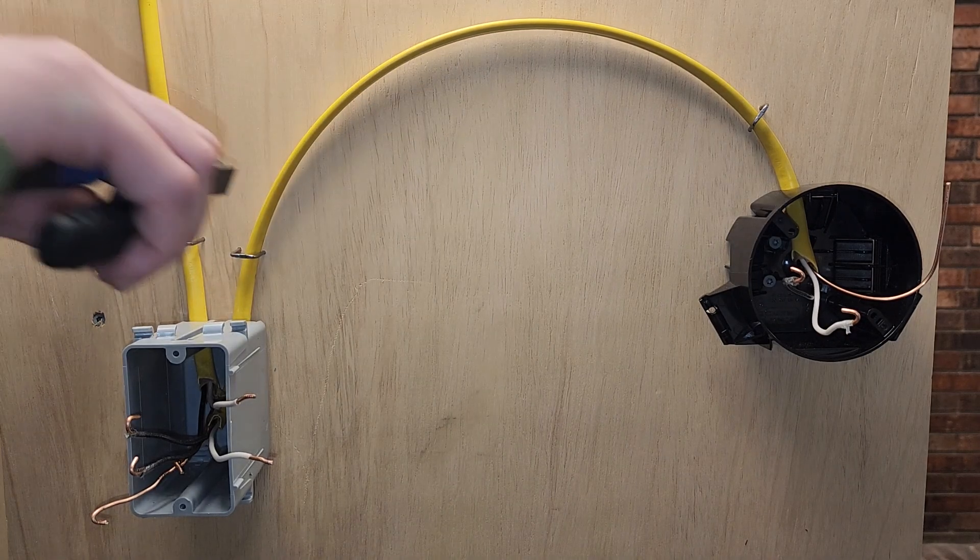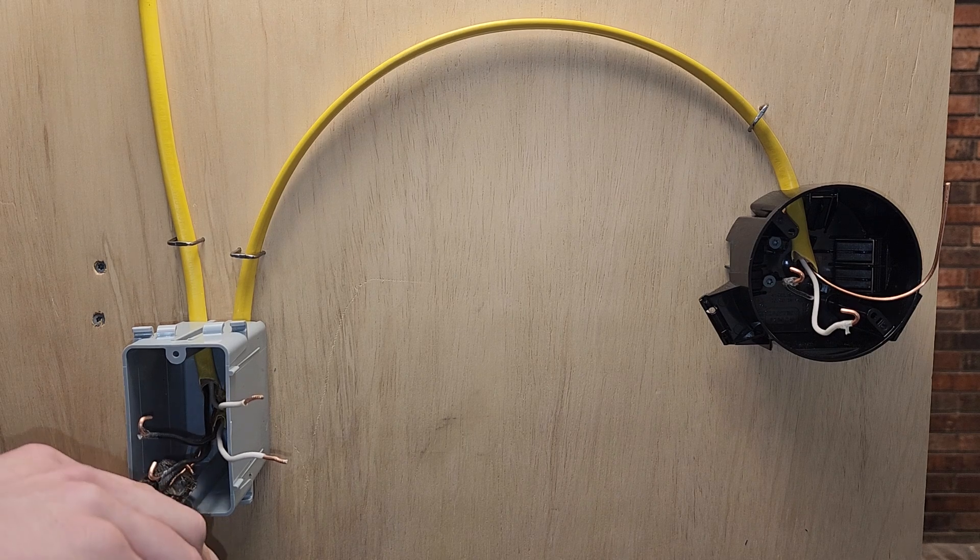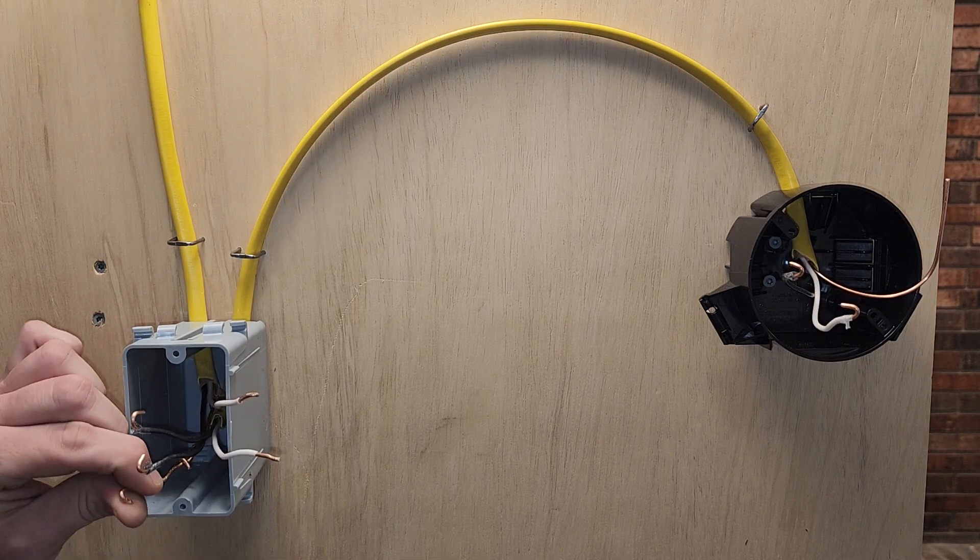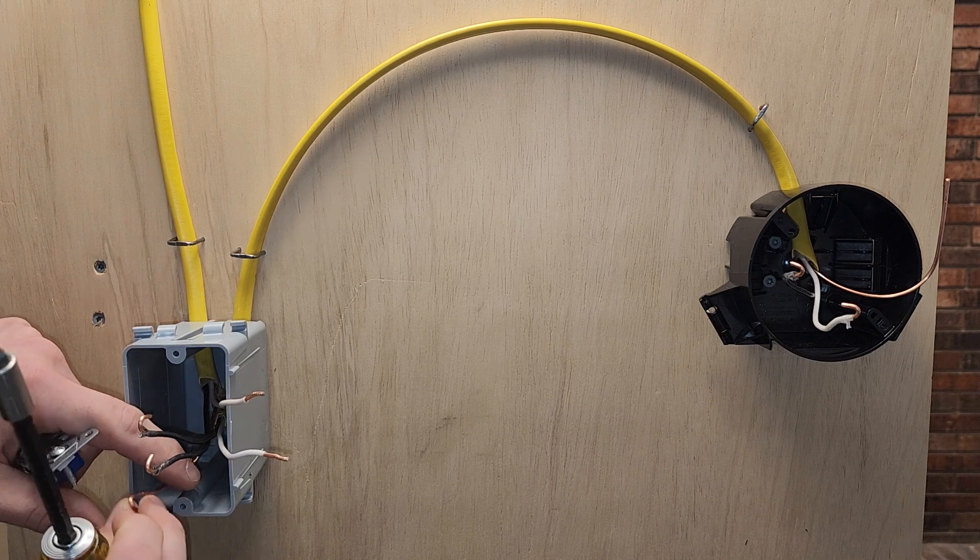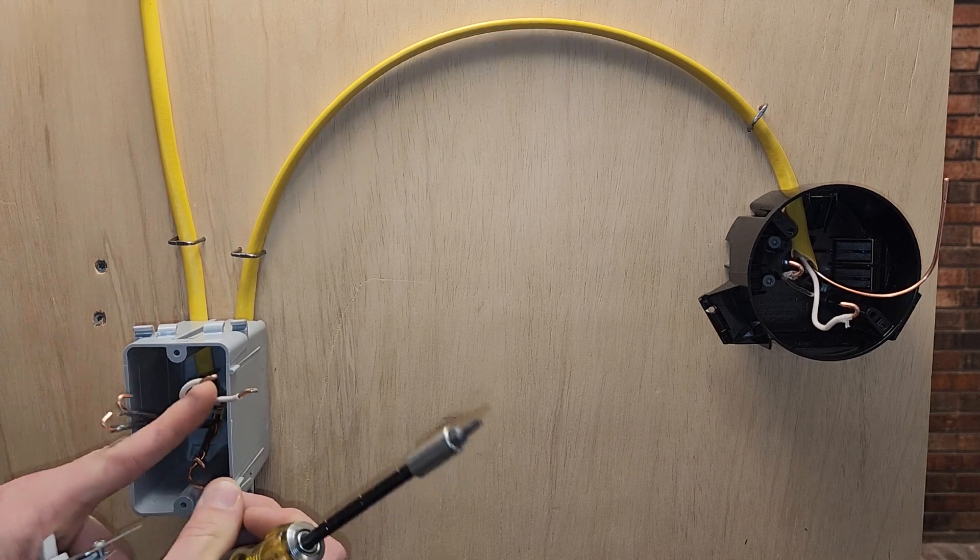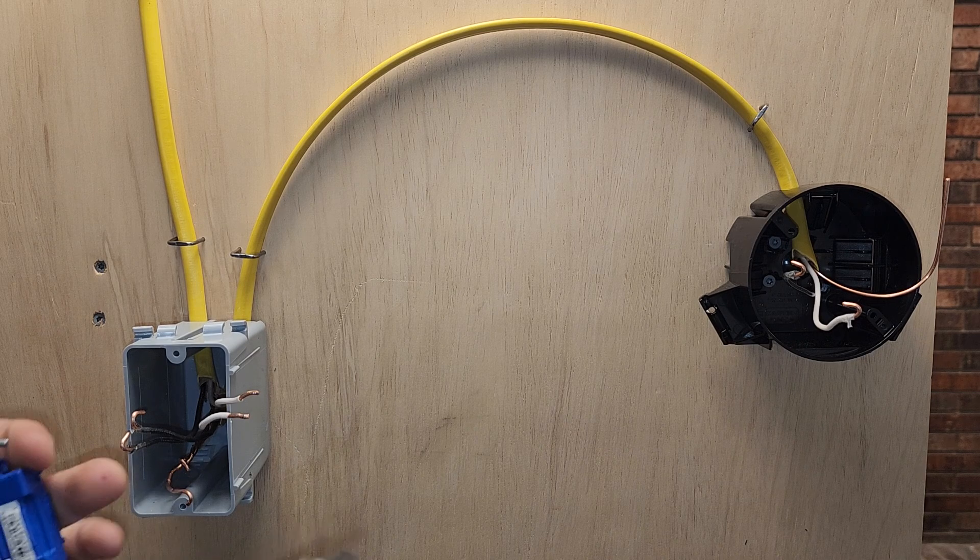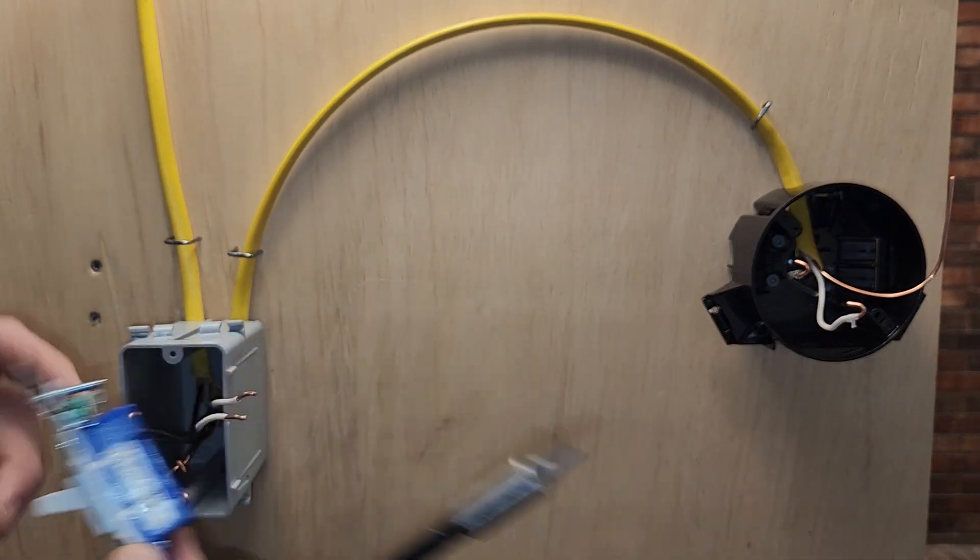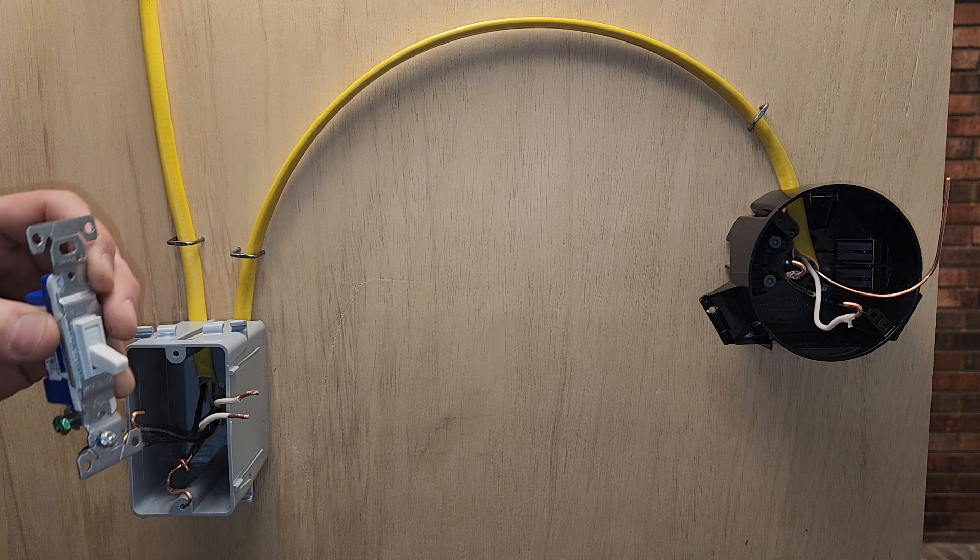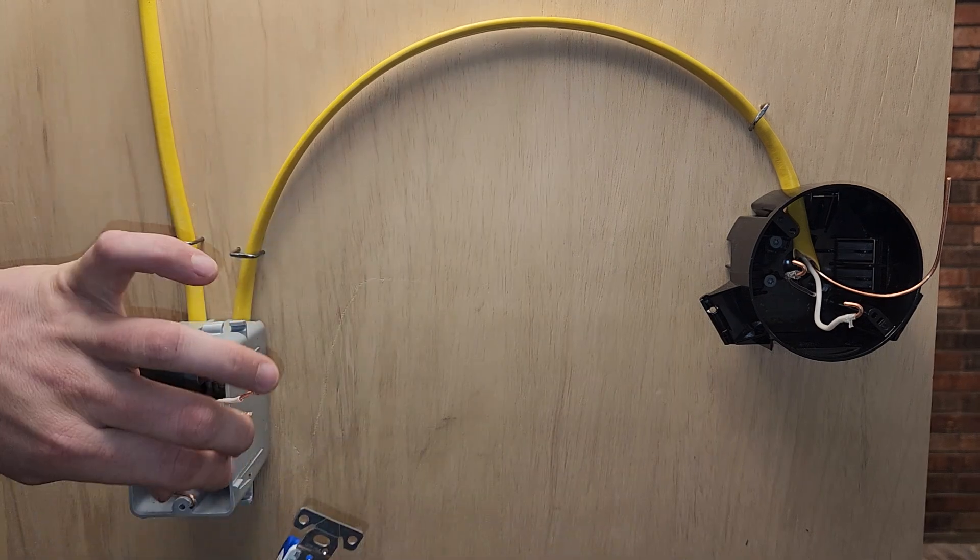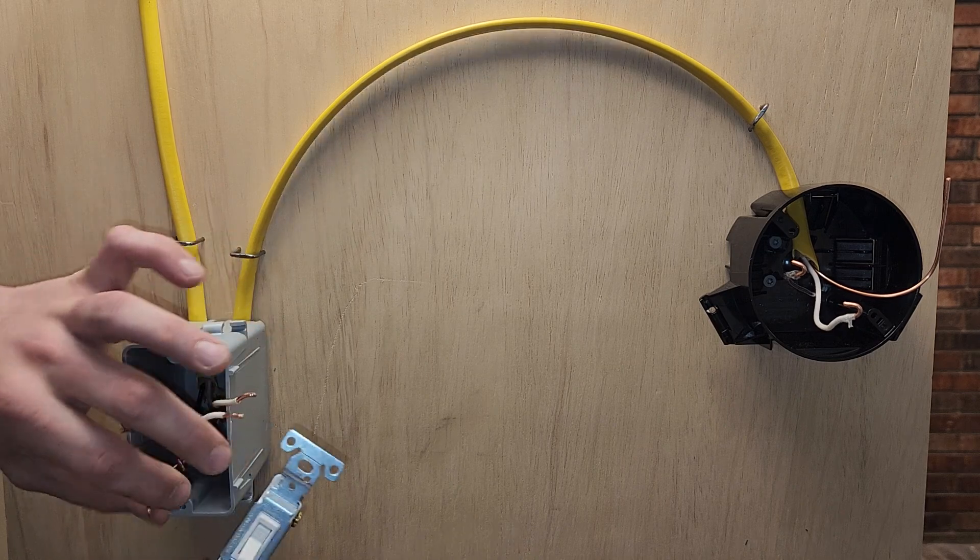I have our two grounds tied together already in this box with just the loops ready to be made up. An important thing to know is the loop that goes on to this green ground screw. You want to make sure the loop is going clockwise with the screw as it tightens for a good connection. If you have it the opposite way, you're actually loosening the connection.